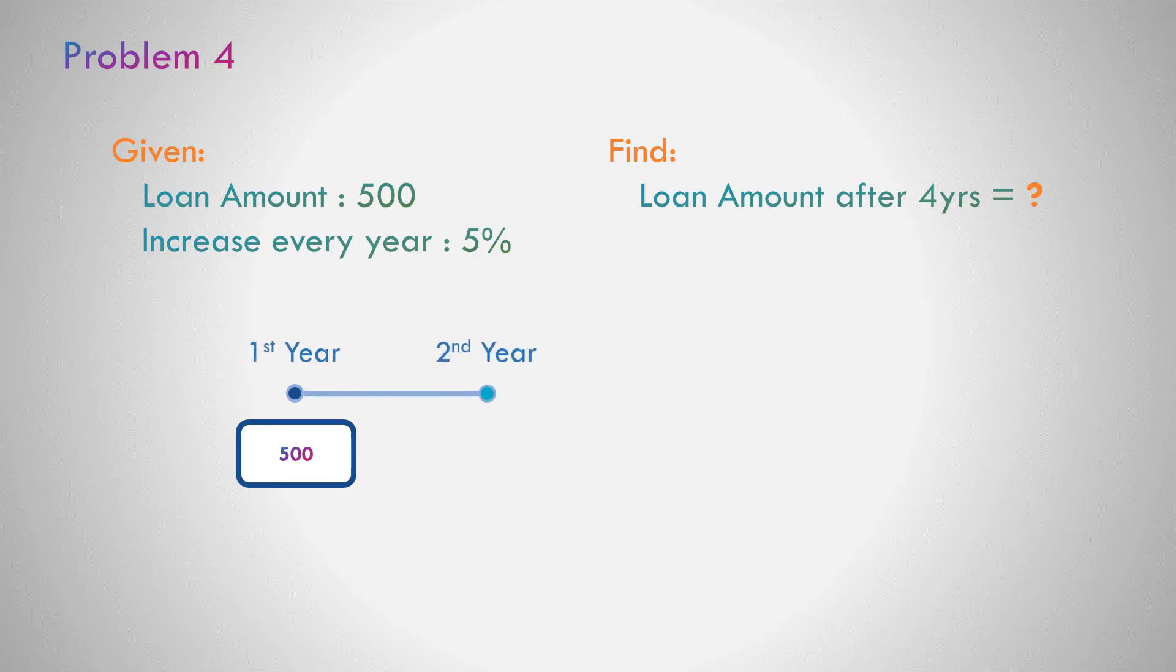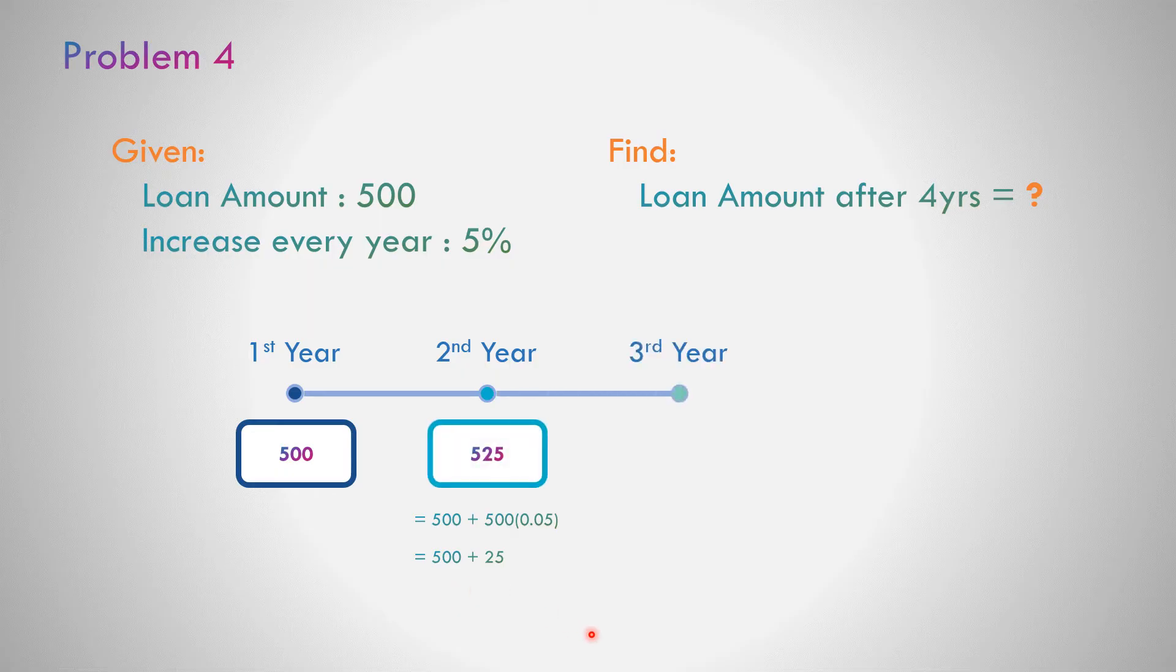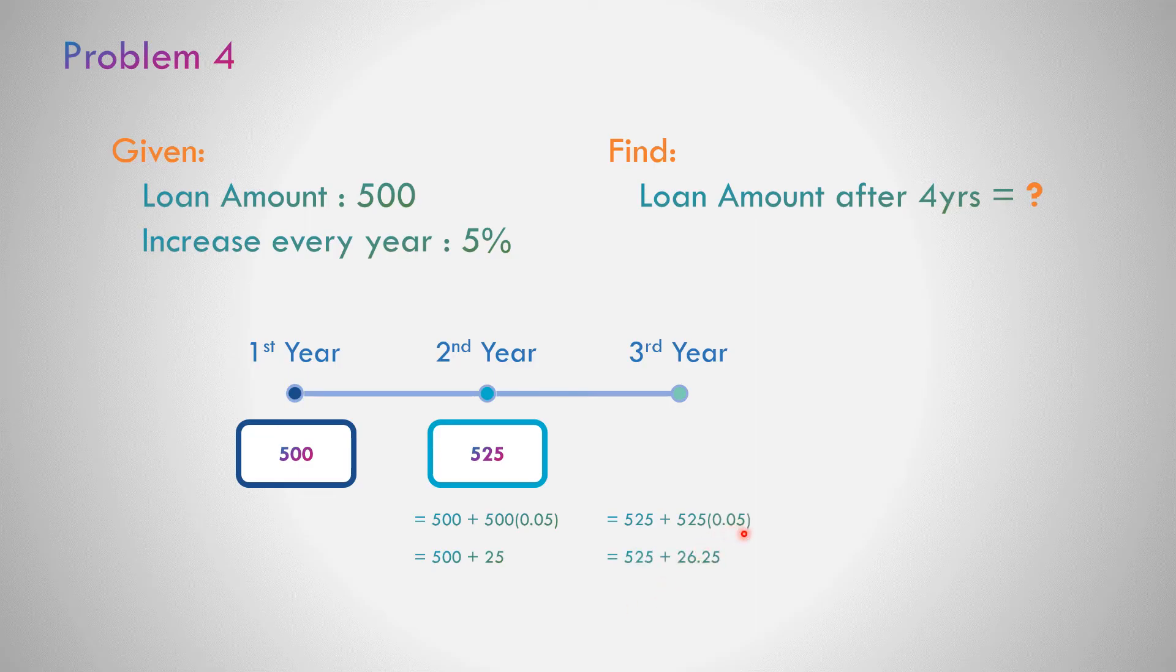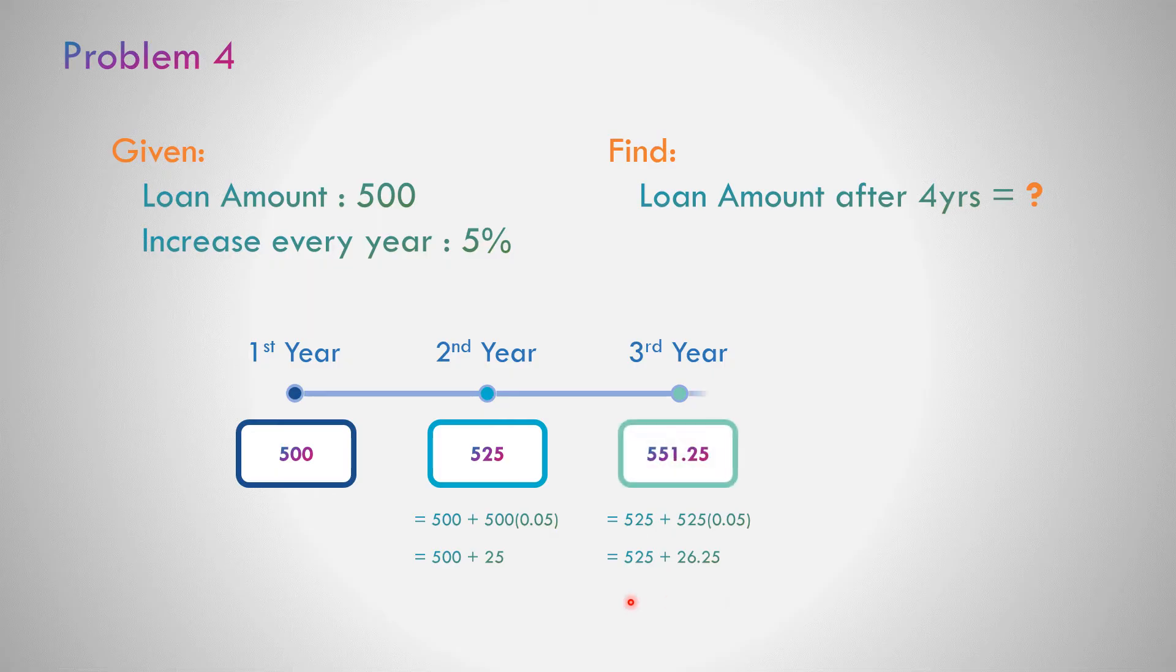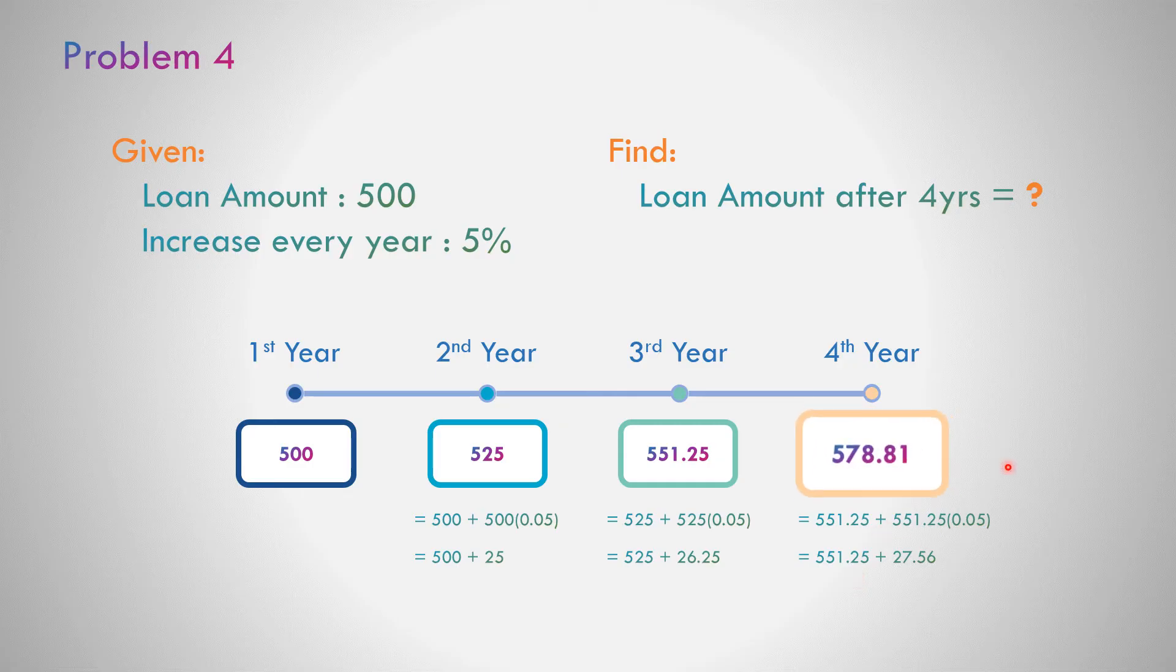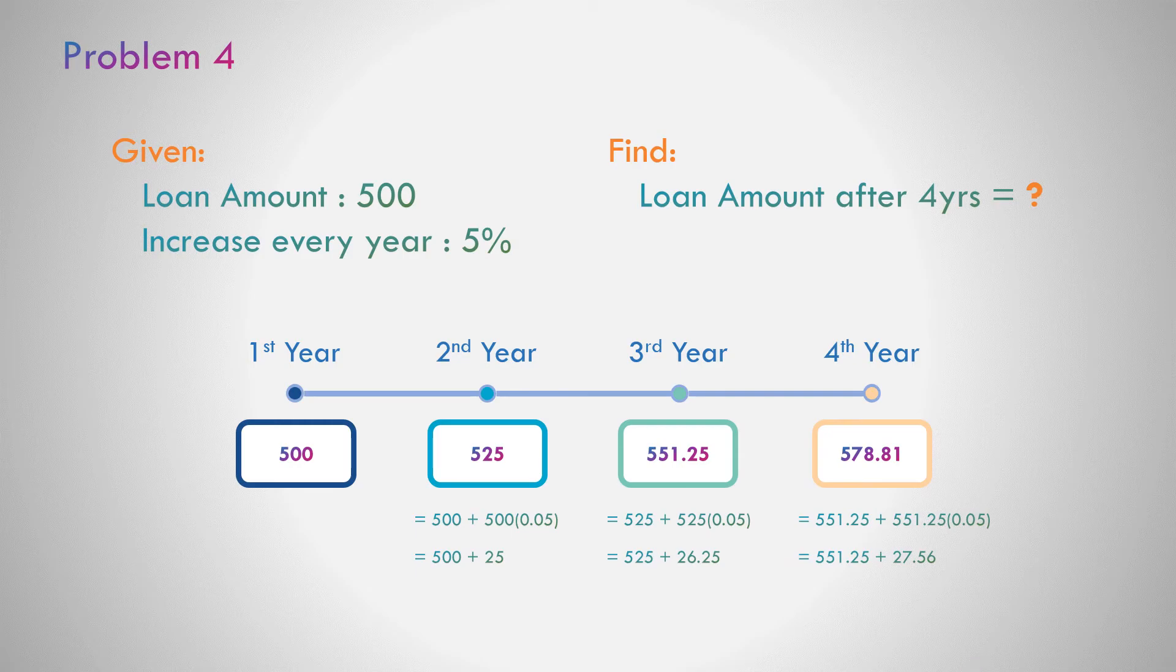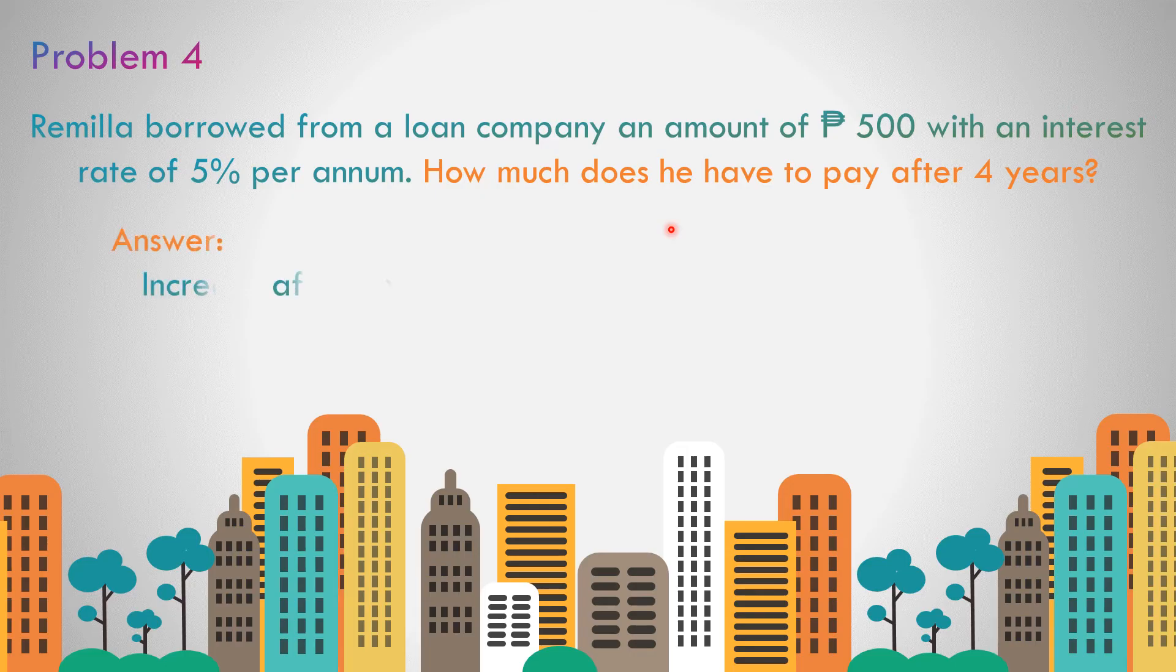In the first year, the loan amount is 500 pesos. Increase every year is 5%, so 500 times 0.05 is 25 pesos. 500 plus 25 in the second year is 525. In the third year, 525 times 0.05 is 26.25, plus 525 equals 551.25. Then 551.25 times 0.05 is 27.56, plus 551.25 in the fourth year equals 578.81. She needs to pay after 4 years 578.81.